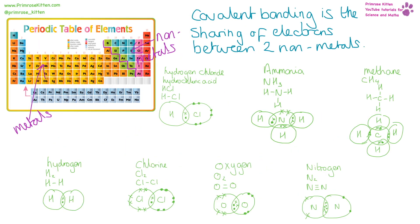Covalent bonding is the sharing of electrons between two non-metals. For the common ones you need to know, you should be able to give the name, the formula, draw it with lines, and draw the dot and cross diagram.